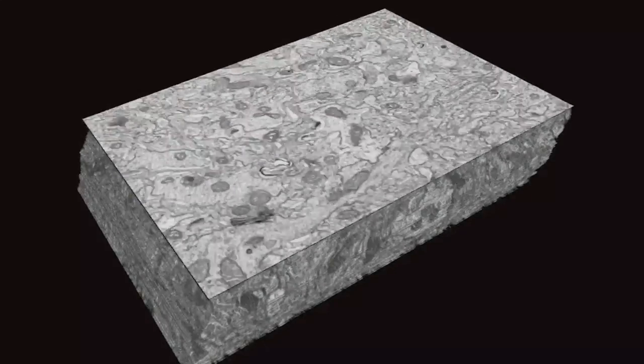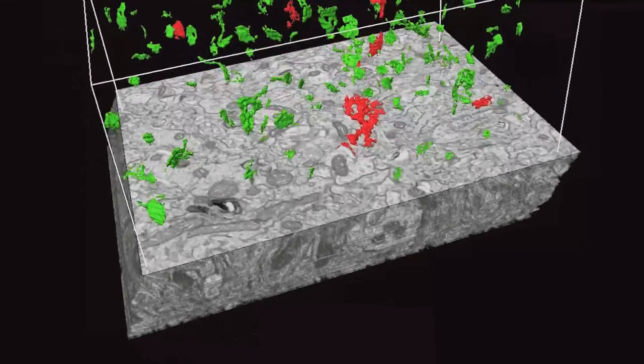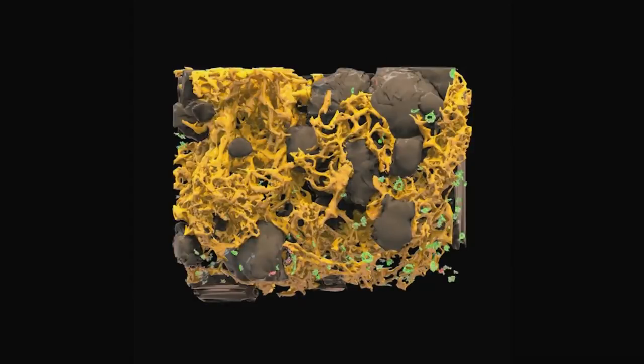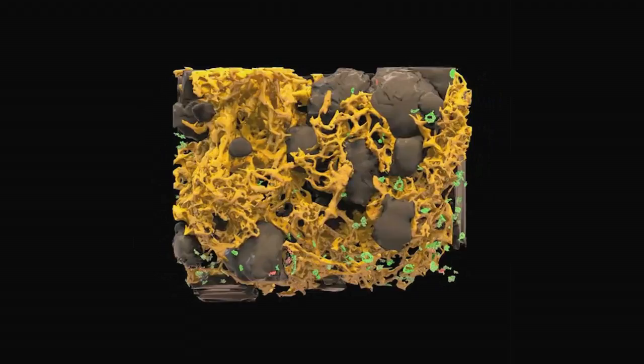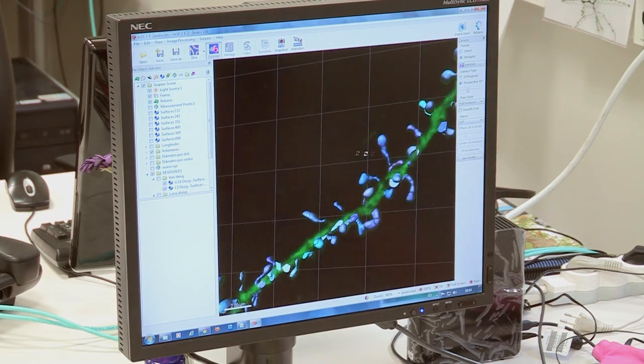This data will be used within the HBP to generate atlases that will help to understand the organization of the nervous system and will provide quantitative estimates of key parameters for simulation of brain function. Data generated in this subproject will be a critical part of the foundations to build the future HBP platforms.